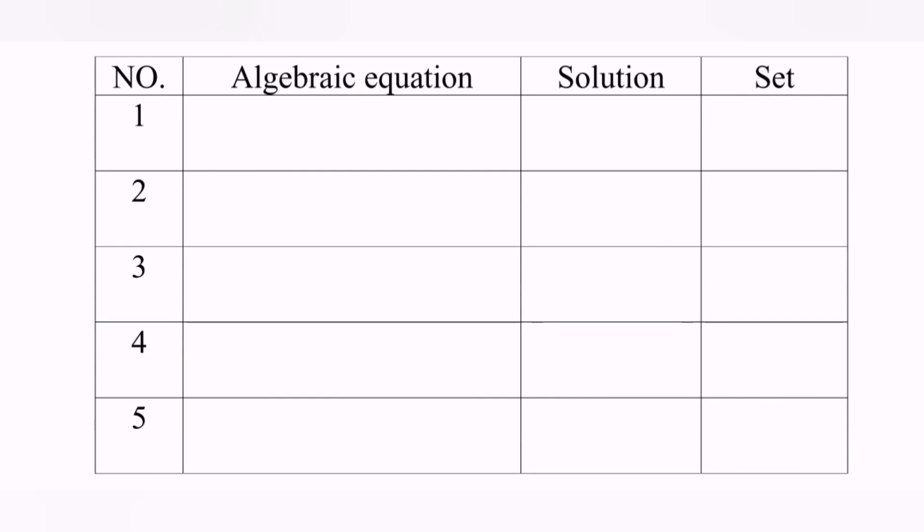Kindly refer to the table. We have three columns. We fill up the first column with the algebraic equation. We are going to use these familiar counting numbers and combine with the prior knowledge. The second column, we have the solution column, followed by the third one, the set notation.